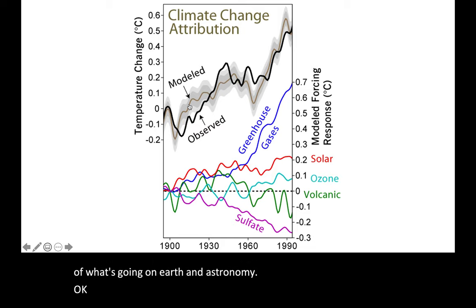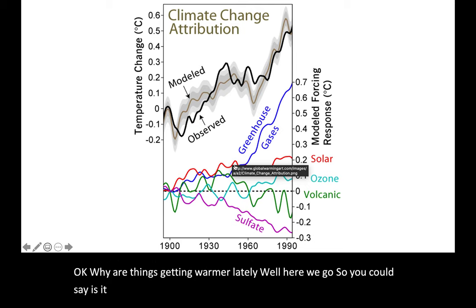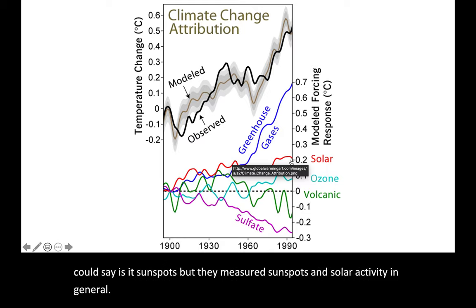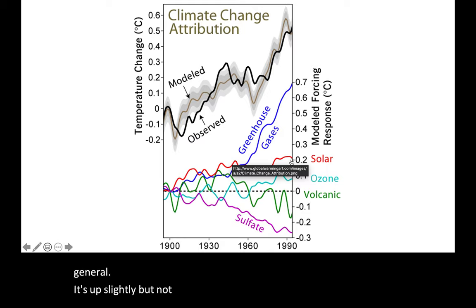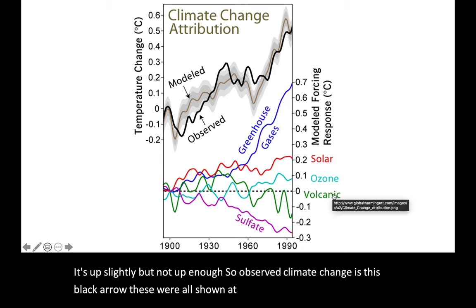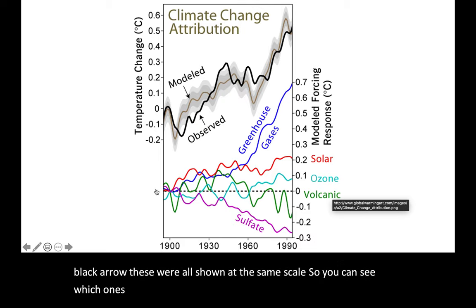So why are things getting warmer lately? Is it sunspots? They've measured sunspots and solar activity in general — it's up slightly, but not up enough. Observed climate change is this black arrow, and these are all shown at the same scale so you can see which ones account for what. You've got ozone, which is pretty much flat. Volcanic activity is actually down.